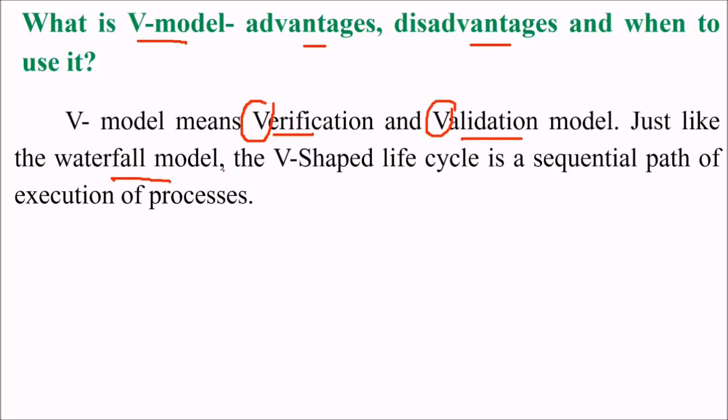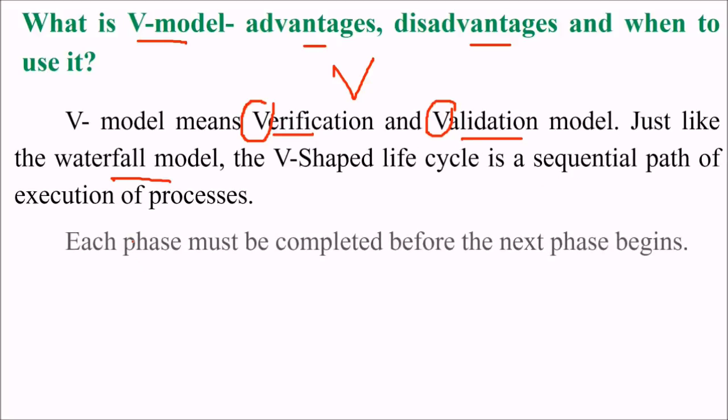Just like the waterfall model, the V-shaped life cycle is a sequential path of execution of processes. Each phase must be completed before the next phase would begin.